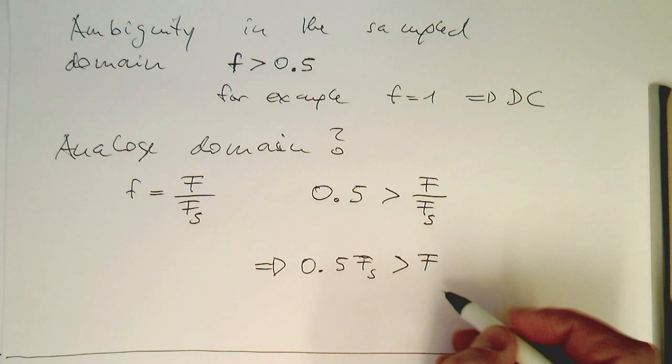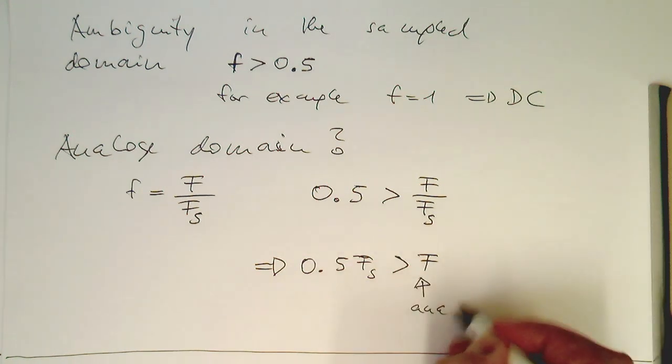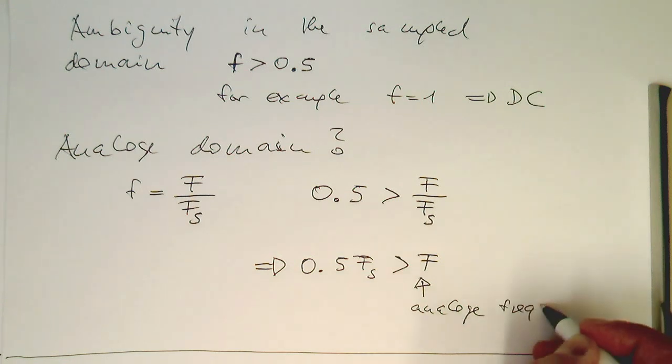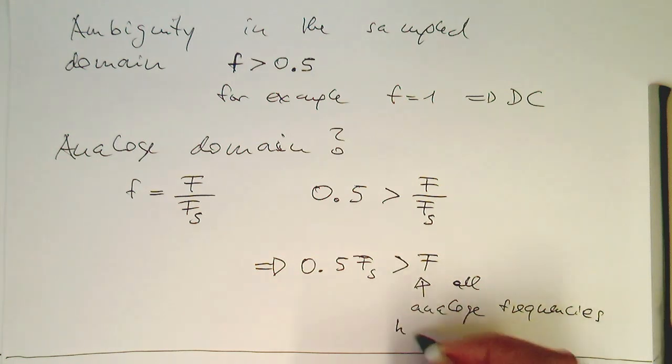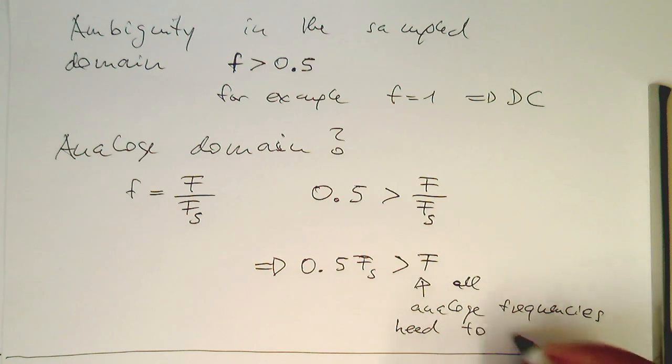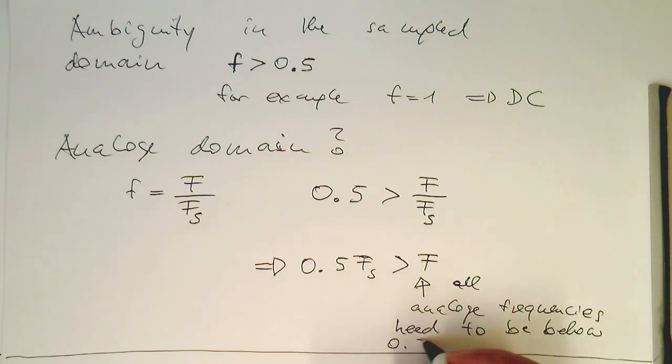And so this means that basically the analog frequencies, the analog frequencies need to be below half of the sampling rate. So all analog frequencies need to be below 0.5 f s. This looks like an H, but it's an N. So analog frequencies need to be below 0.5 f s.